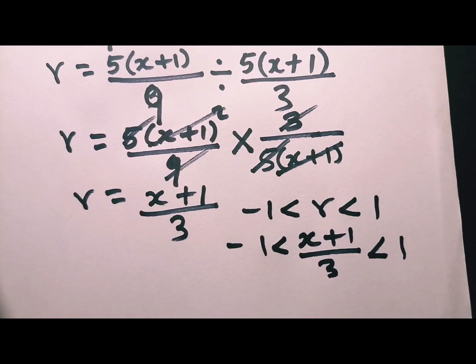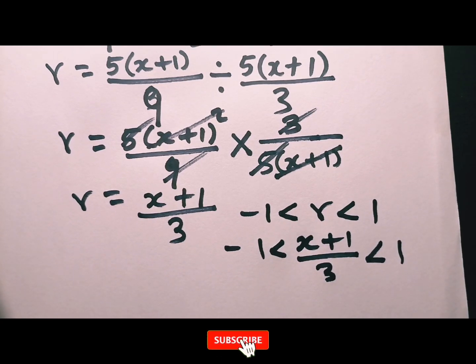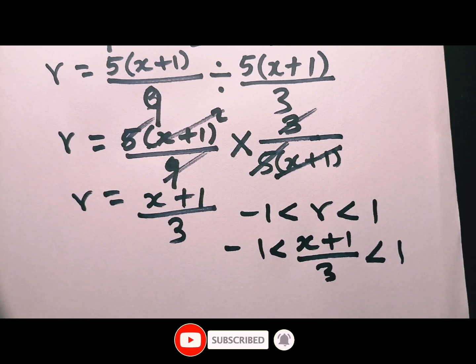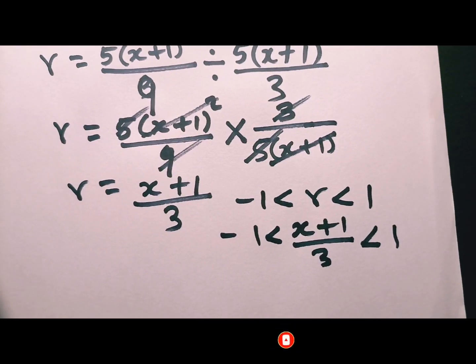We are going to have x plus 1 all over 3. The reason why we do it like this is because they told us that this geometric series is convergent.